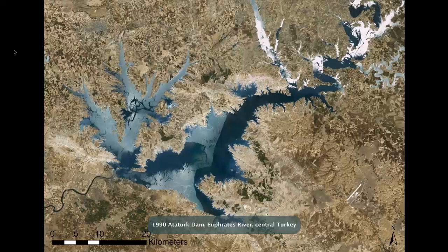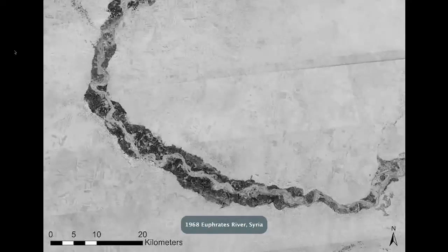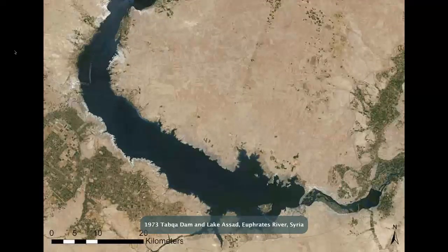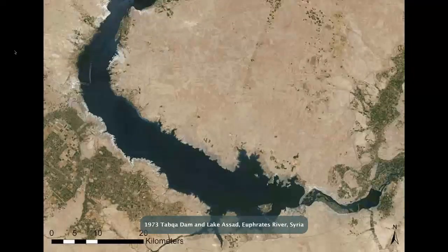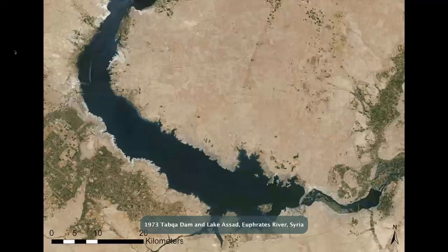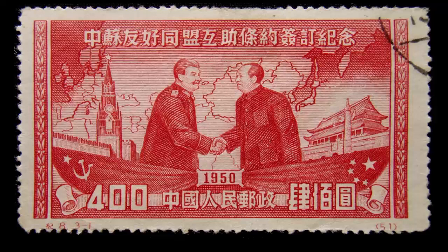Dam projects continue to affect archaeological sites — here in Turkey, named after Ataturk, and in Syria along the Euphrates River, the cradle of civilization. Lake Assad covers much of this historic landscape of the first civilizations. That brings us to the final site of today's lecture, which is in China — a very interesting coming together, because so many of these forces ironically converge here, including the role of tourism and heritage conservation.